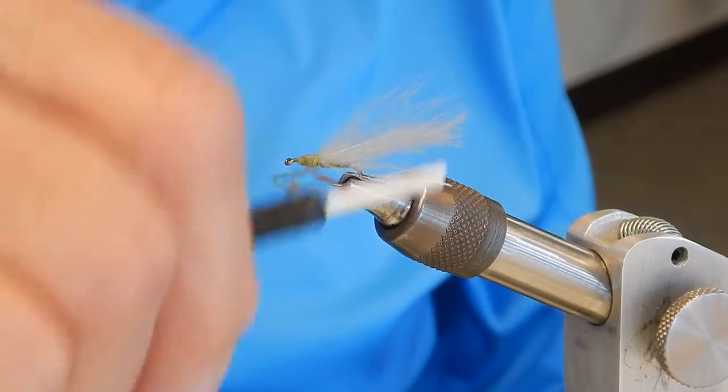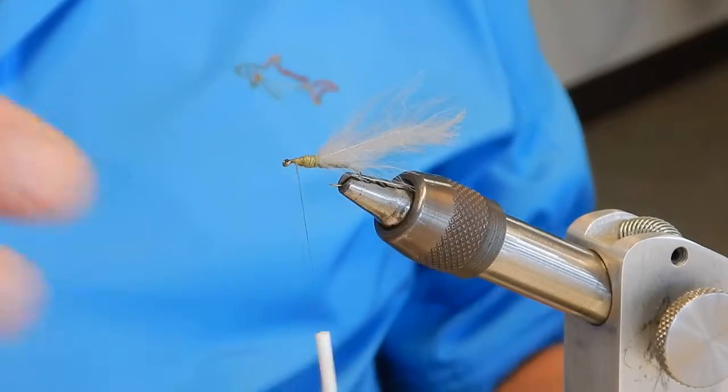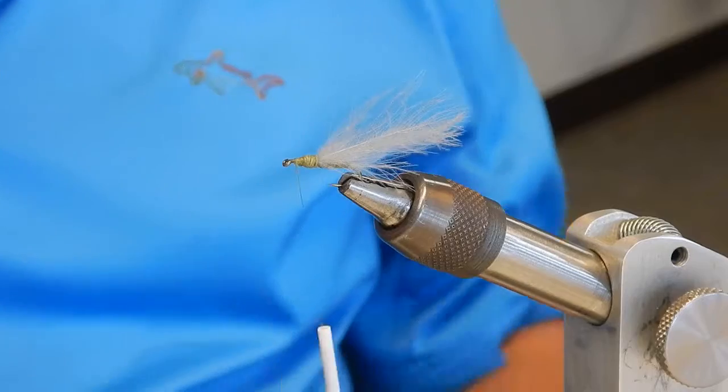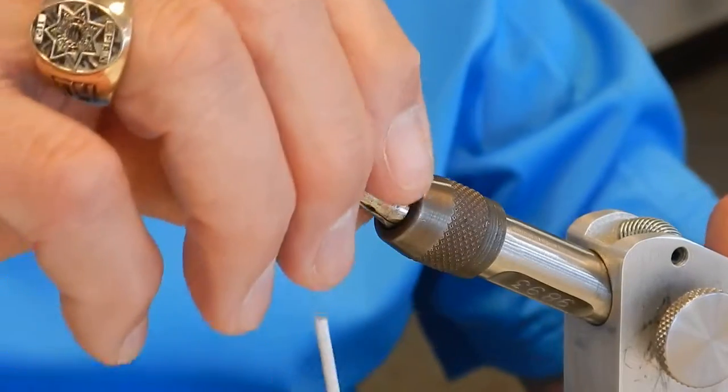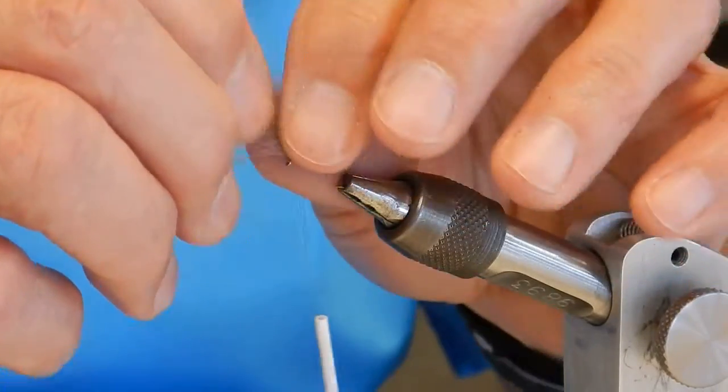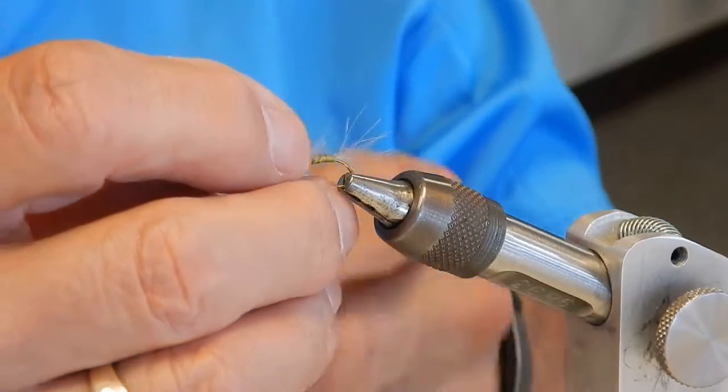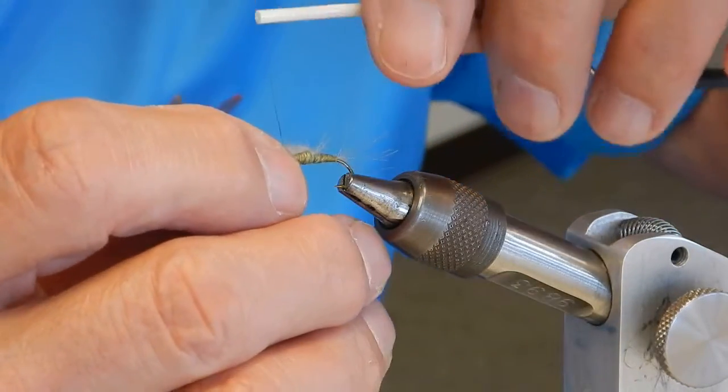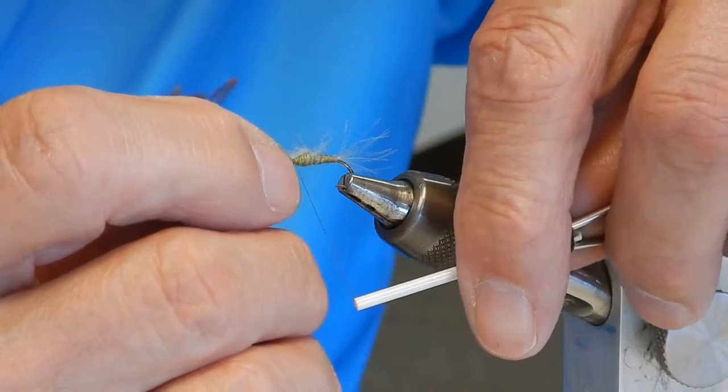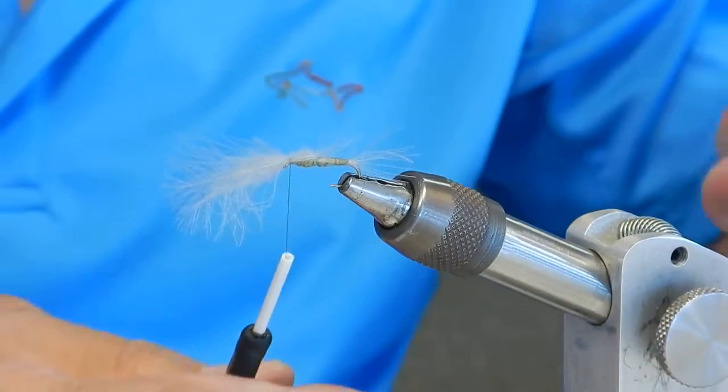Now stop, when you do this, stop behind the hook eye far enough so you have some room to work with the C.V.C. Now all we're going to do is pull this forward. Now, don't put too much pressure on it. Take your left hand and snug it down. You don't need to pull that super tight.